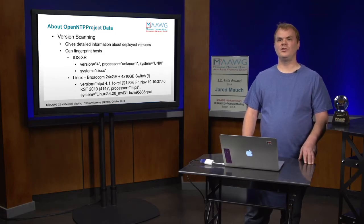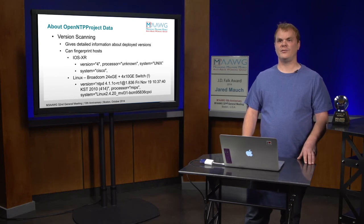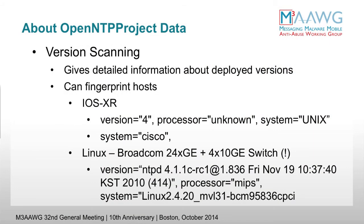With NTP version scanning, you get pretty detailed information about the hosts you're talking to. There's the Mode 7 request, which is the MonList, and there's Mode 6, which provides detailed version information about the hosts — which can be very revealing for penetration testing or security evaluations. iOS XR, for example, provides a very unique distinct signature output compared to iOS devices, which just returned 'Cisco.' You can see here version information from a Broadcom-based Ethernet switch exposed on the internet, including the build date of the NTP version and the individual version running there, which does not include the fix for the NTP MonList.